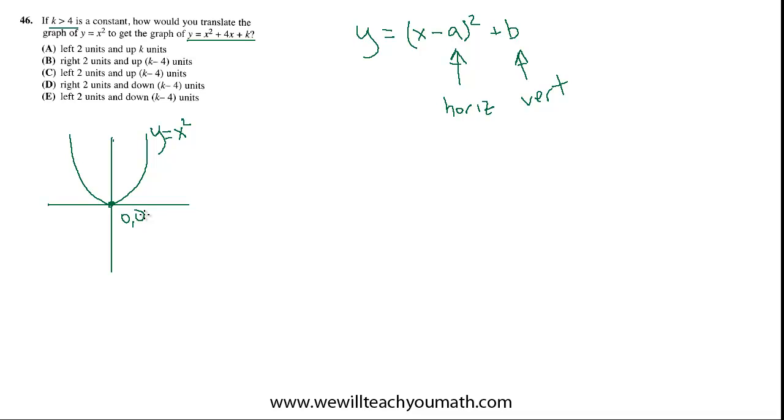This graph, y equals x minus a quantity squared plus b, has the exact same shape as y equals x squared. The only difference is that it's been translated a units to the right and b units up, assuming that this is minus a. So, if a is a positive number, it's minus something. That moves it to the right, and then positive b moves it up.